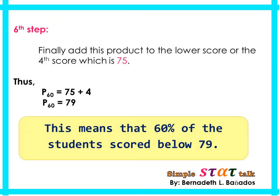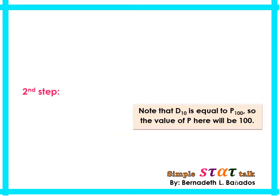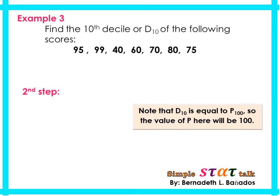Next, add this product to the lower score, which is the 4th score — 75. So 75 plus 4 gives us 79. Therefore, the 60th percentile is 79. This means 60 percent of the students scored below 79, or equivalently, 40 percent of the students scored 79 and above.